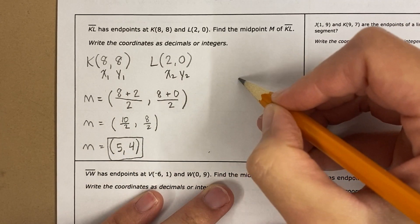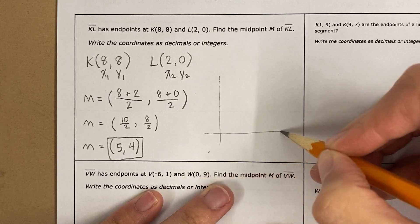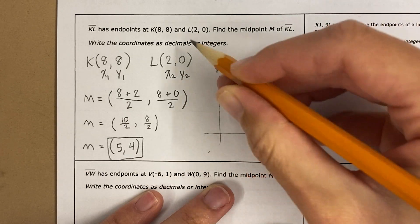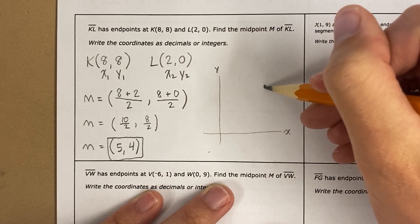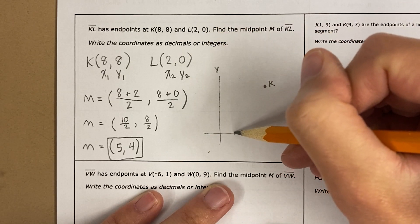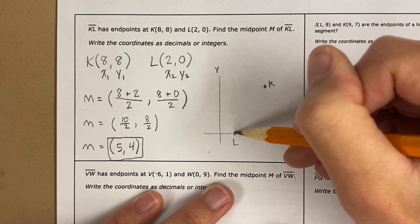Now I want to show you that this makes sense. If I just sketch a graph right here, this is x and y. K, this is 8, 8, this is point K, and L is 2, 0. Here's L.